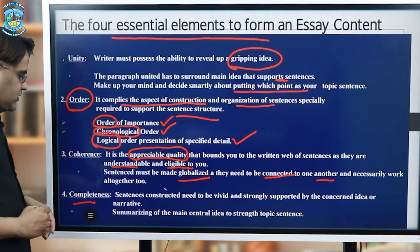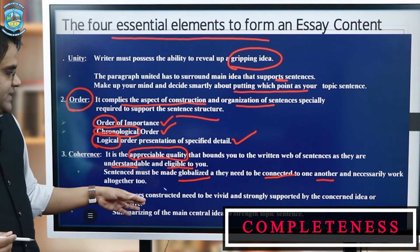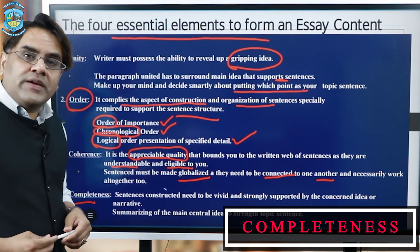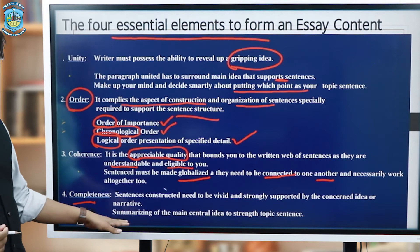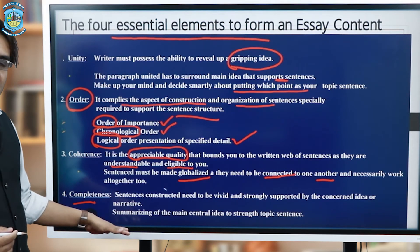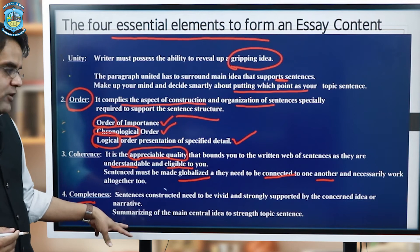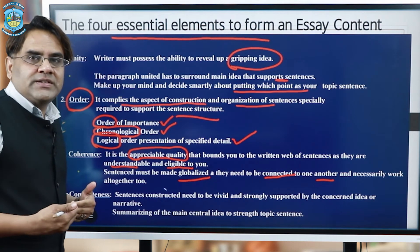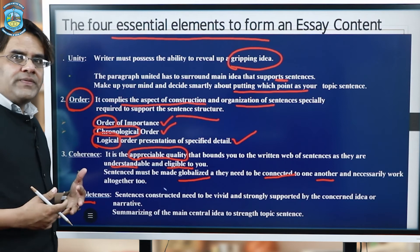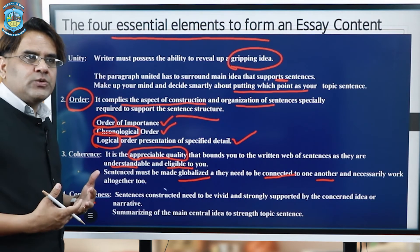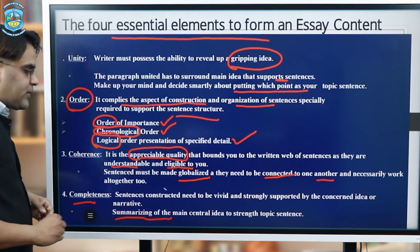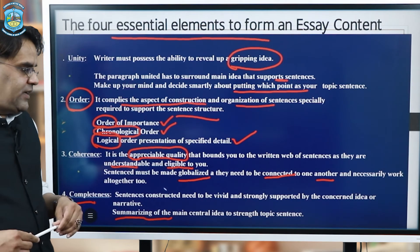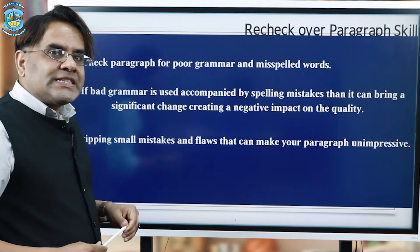And lastly, we have completeness. Sentences constructed need to be very vivid and at the same time strongly supported by the concerned idea. It can even be in the form of a narration to make your readers realize how that idea relates to your narrative thinking. And lastly, you are supposed to summarize the main central idea to strengthen the topic sentence.